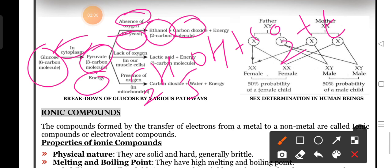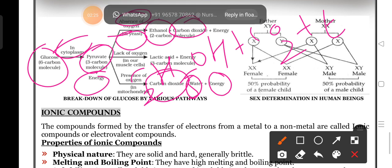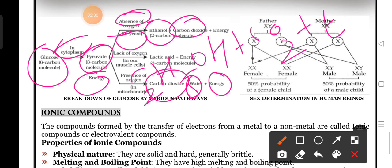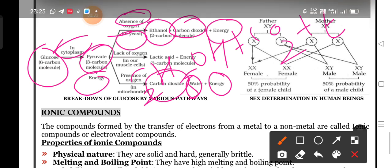Next, glucose breaks down into pyruvate. Pyruvate in the presence of oxygen - this is very important - it is our respiration. Glucose breaks down into pyruvate, and pyruvate in the presence of oxygen gives products like carbon dioxide, water, and large amount of energy. In the cases of absence of oxygen, liberation of energy is very less.